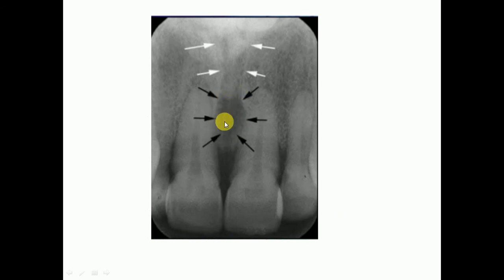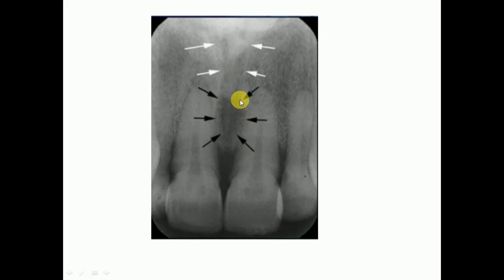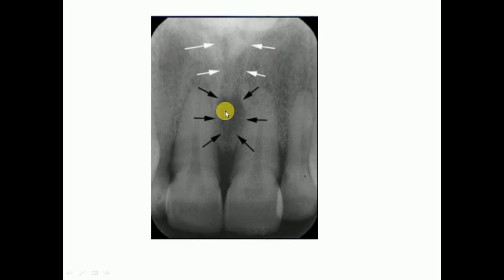Remember, the black area on a radiograph is known as radiolucent, whereas the white area is known as radiopaque. This is the radiolucent area visible on the periapical radiograph.